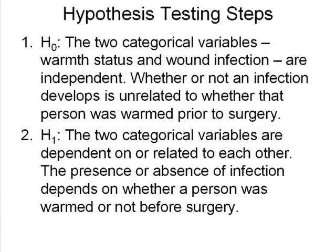Now let's fill in the opposite of that, which is our null hypothesis — step one. Step one: the null hypothesis is that the two categorical variables, warming status and wound infection, are independent. Whether or not an infection develops is unrelated to whether that person was warmed prior to surgery. These are pretty wordy compared to when we'd just write mu of A equals mu of B or rho equals zero, but that's one of the disadvantages of the chi-square. Other than that, it's pretty easy.